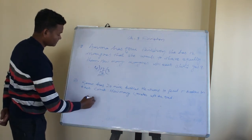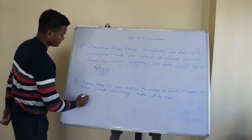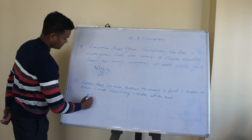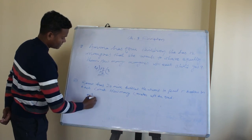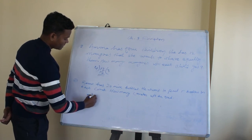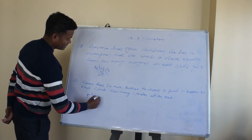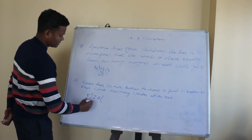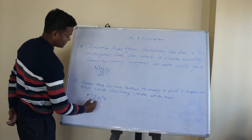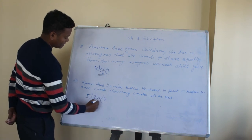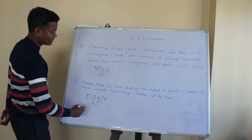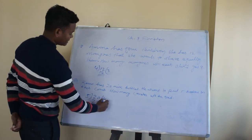Let us do 20 divided by 5. 5 times 4 is 20. Ramu has 4 cartons.